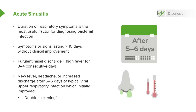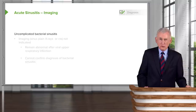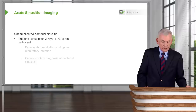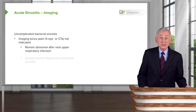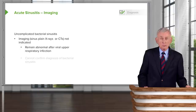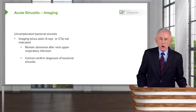If a patient has what we call double sickening, we begin to think about bacterial superinfection. Regarding imaging in acute sinusitis — this is overused. In uncomplicated bacterial sinusitis, you don't need to image the sinuses. If you were to image somebody with a common cold, you would find sinus thickening, or even air-fluid levels — findings that don't confirm bacterial sinusitis. Generally, imaging is not indicated in acute sinusitis, unless you suspect fungal sinusitis where you may see bony invasion.